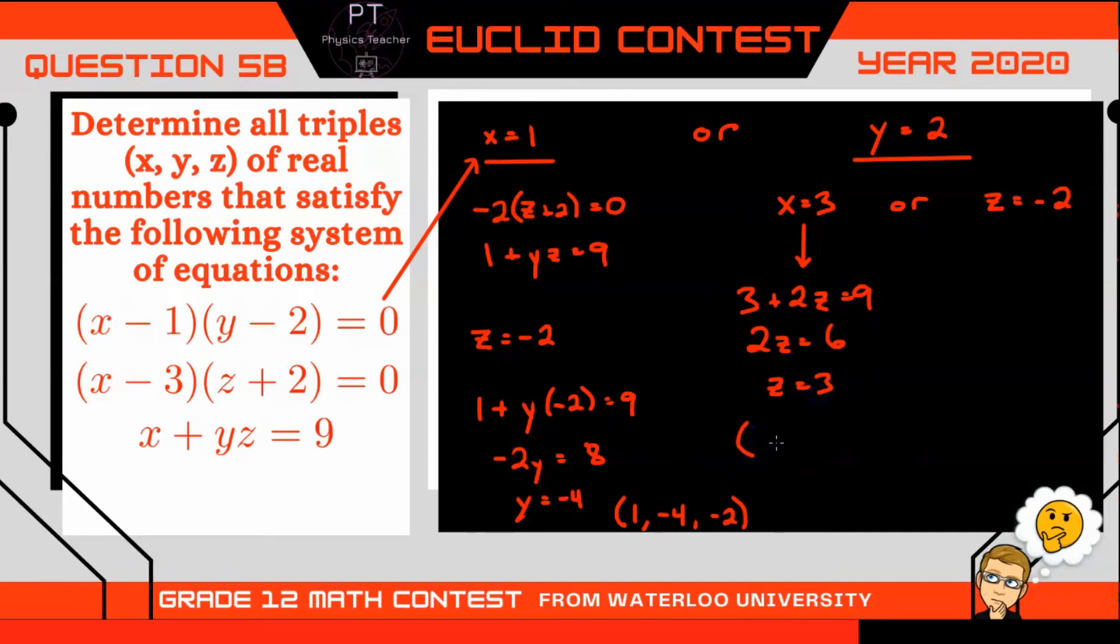All right, let's look at our last possibility here where y is 2 and z is negative 2. So we're left in our third equation with x plus y which is 2 and z which is negative 2, and that is all going to equal 9.